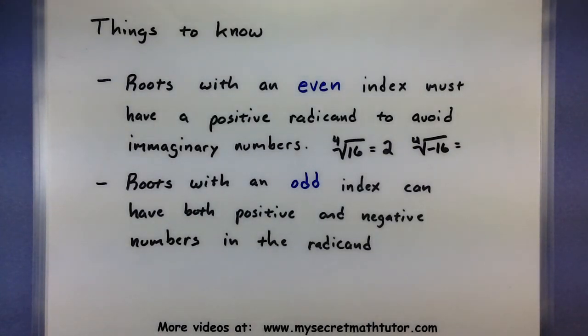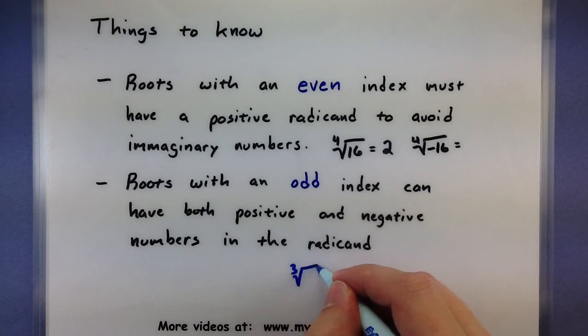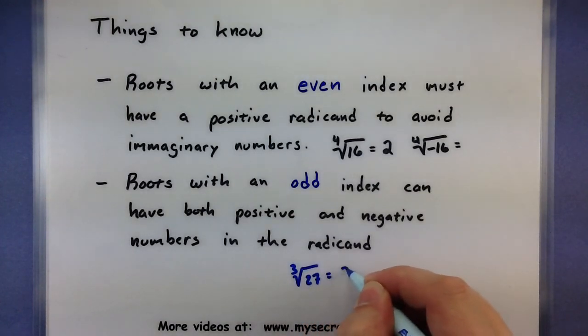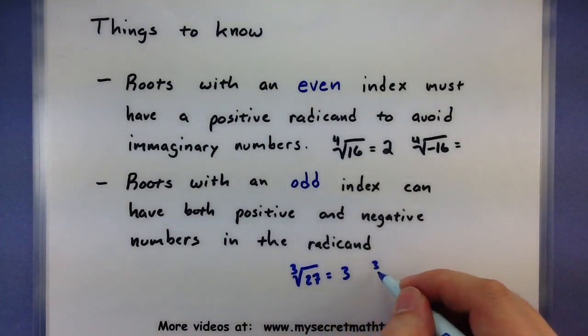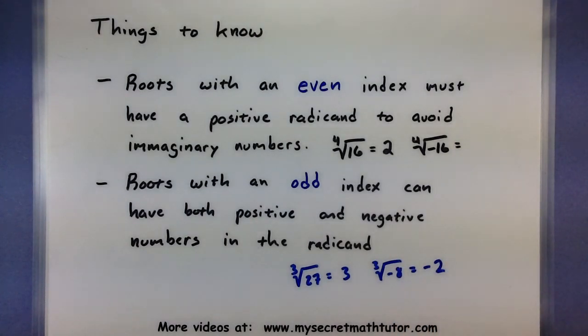Now on the flip side, when you start working with odd indexes, say cubed roots or even the 5th root of something, then in the radicand you can have both positive and negative numbers. So something like the cubed root of 27, that'd give you 3. And you can also do something like the cubed root of negative 8, that'd equal a negative 2. So both those are allowed.